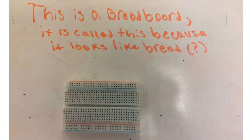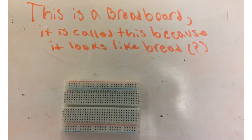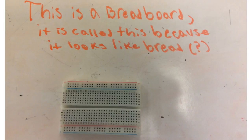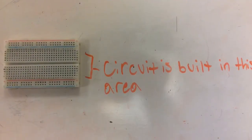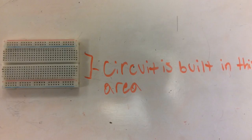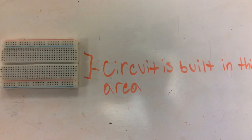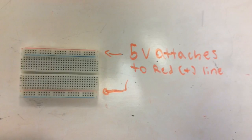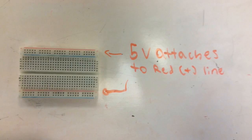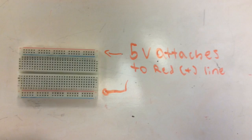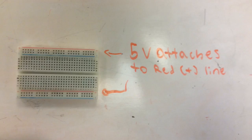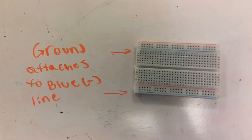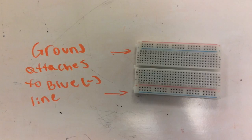A circuit cannot be made directly on an Arduino, so you must wire the circuit on a breadboard and connect the breadboard to the Arduino with wires. The circuit is built in the area with all the open holes. The 5V pin on the Arduino should connect to the red plus lines to power that whole strip, which will power the board once you connect wires to it. The ground pin should be connected to the blue negative side, and all circuits should end with a wire there.